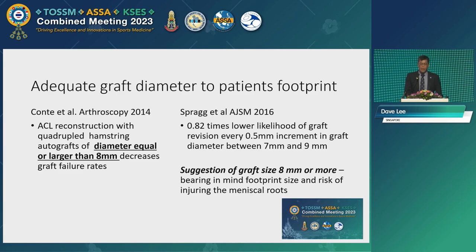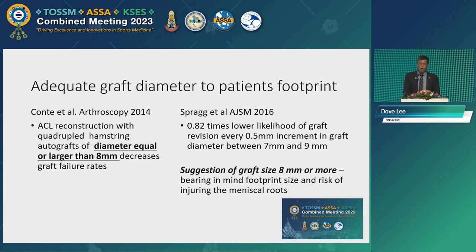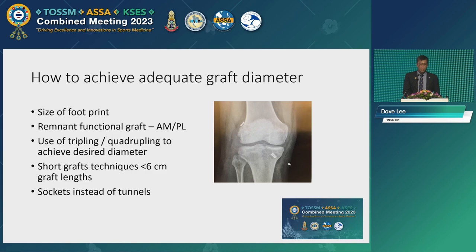Importantly, get an adequate graft diameter. We know that if you have insufficient graft diameter, every reduction in graft diameter increases the risk of ACL revisions. A suggestion of graft size of 8mm or more is ideal, of course bearing in mind the notch diameter in an Asian patient.